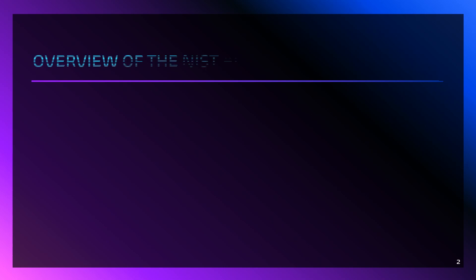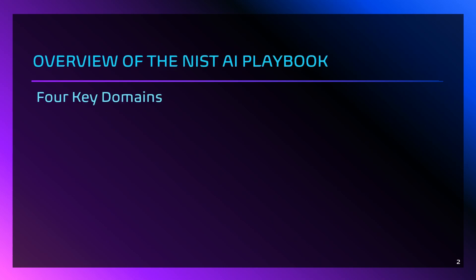The NIST AI playbook is structured around four key domains. These domains provide a comprehensive approach to managing AI risks across the life cycle of AI systems. Today we will focus on these domains, and we will begin with Govern.